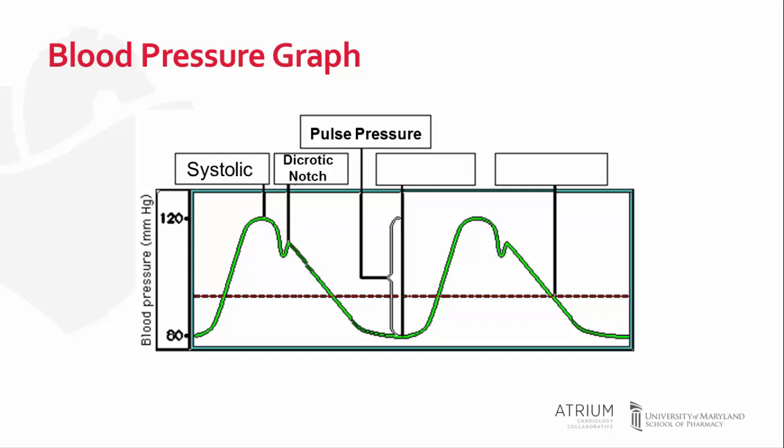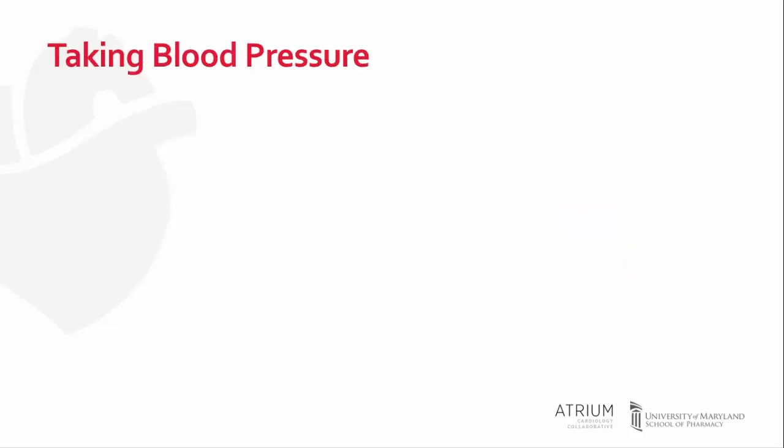The dicrotic notch represents the interruption of blood flow due to the brief blockage that closes the aortic valve when the ventricles relax. The diastolic blood pressure is the lowest pressure in the artery while the ventricles are relaxed. This is normally read as 80 millimeters of mercury in a healthy patient. You can then take the average of the systolic and diastolic pressure, and that would be the mean arterial pressure.